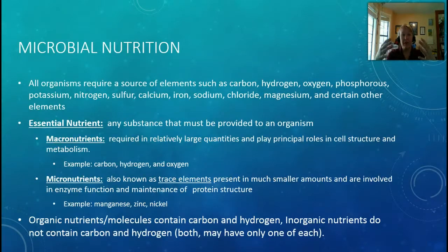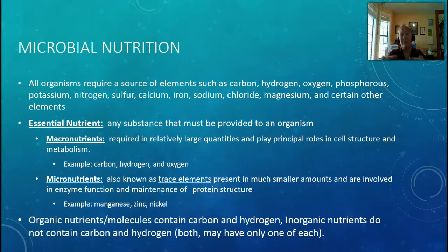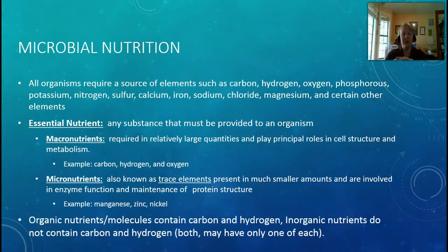Let's start out with microbial nutrition. All organisms require specific elements in their diet, just like you and I. Microbes are no different — it just happens that they might need slightly different things than we do. The first term we need to learn is essential nutrient — any substance that must be provided by the organism. Autotrophs are capable of getting this on their own, but we have to eat it.